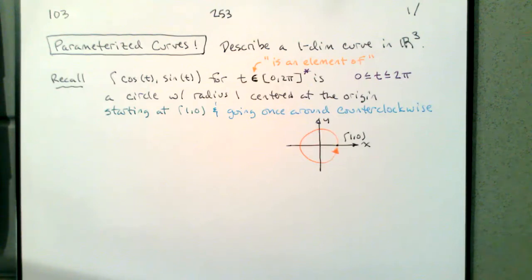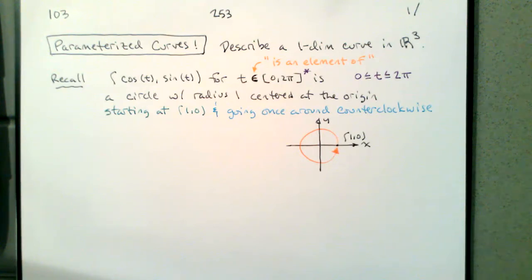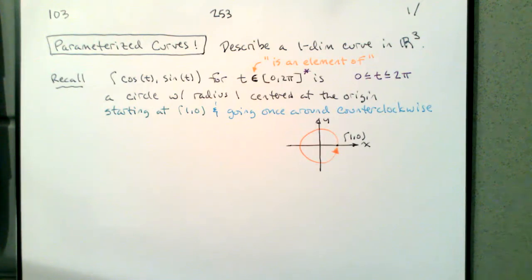Today we're going to continue looking at parameterized curves. We want to be able to describe a one-dimensional curve in R3, and we're starting off by describing one-dimensional curves in R2. Our favorite one to use is the unit circle. Recall that the parameterized curve where x is cosine of t and y is sine of t, for t between zero and two pi, will give us a circle of radius one centered at the origin.